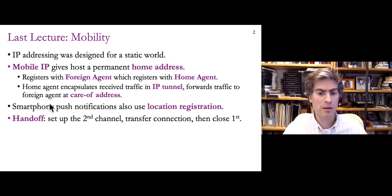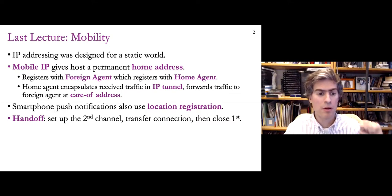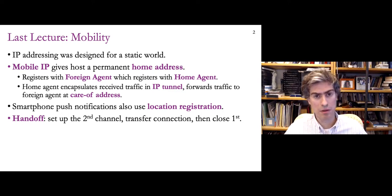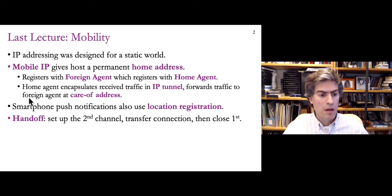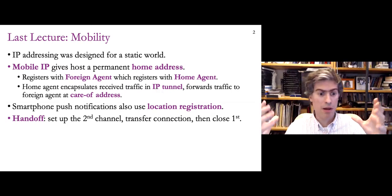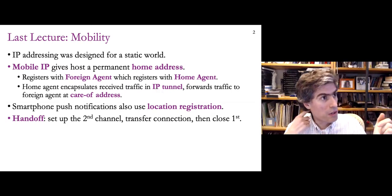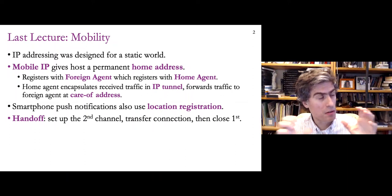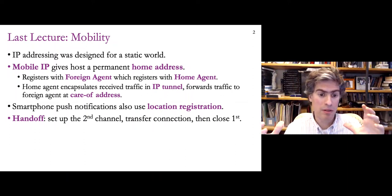That's a pretty simple idea. It had some inefficiency because packets go to one place before being forwarded, but it allows IP addresses to change while still being able to reach that machine with IP messaging. This is done with a kind of IP tunnel, where you have one IP packet inside of another IP packet — the same basic technique used to tunnel IPv6 traffic through an IPv4 network.